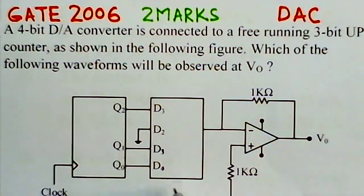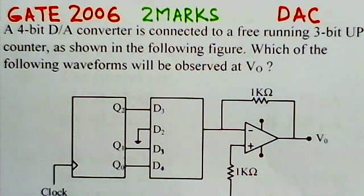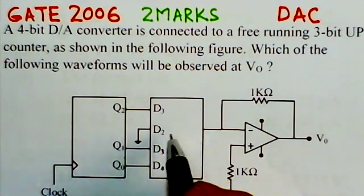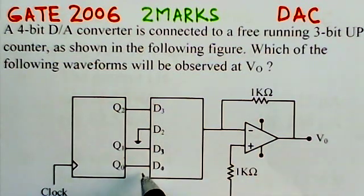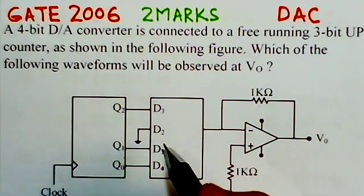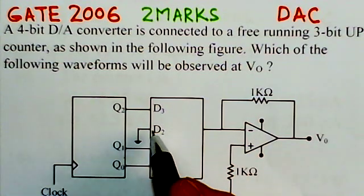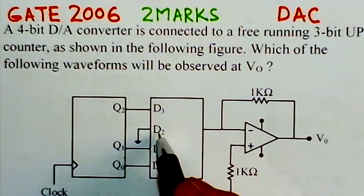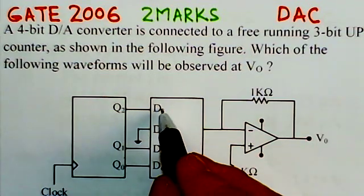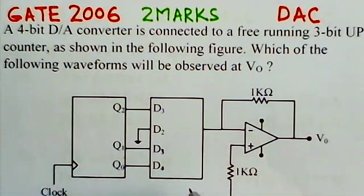The second block here is a 4-bit DAC, digital to analog converter. There are three outputs from the counter, but the DAC is having 4 inputs. One of the inputs here is grounded. That means this input is always zero. This being the MSB part and this is the LSB part of the input of 4-bit DAC.